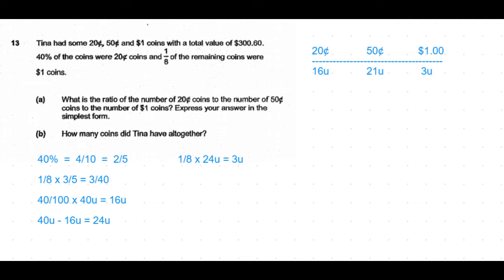The first question is: what is the ratio of the number of 20 cent coins to the number of 50 cent coins to the number of one dollar coins? So the ratio is 16 : 21 : 3. This is already in the simplest form. That's the answer for the first part of the question, which is a two mark question.